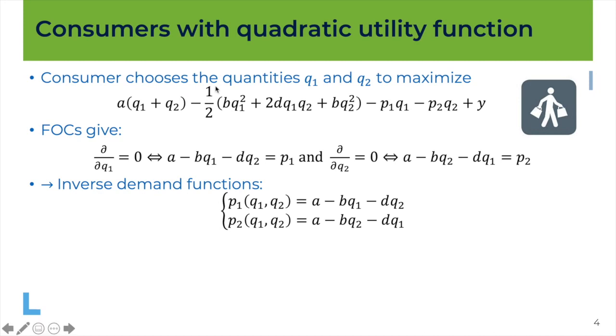Remember that when we maximize this net utility with respect to the quantities q1 and q2, which is done here, taking the first order conditions, we derive the inverse demand functions. We express the price of good 1 and the price of good 2 as a function of the quantities q1 and q2.